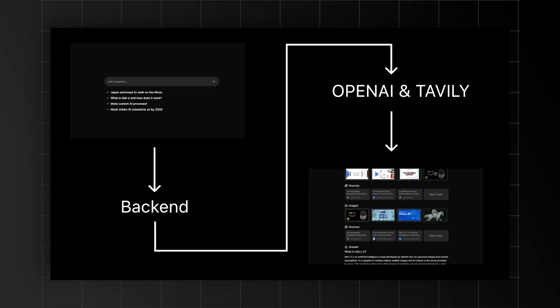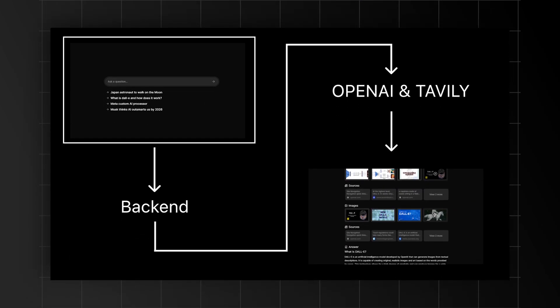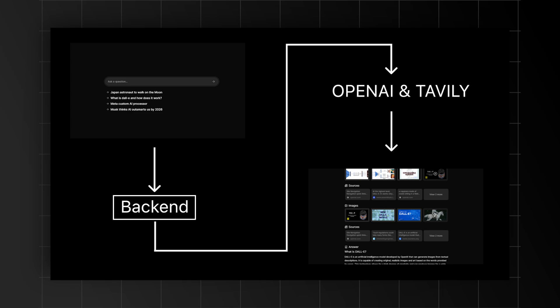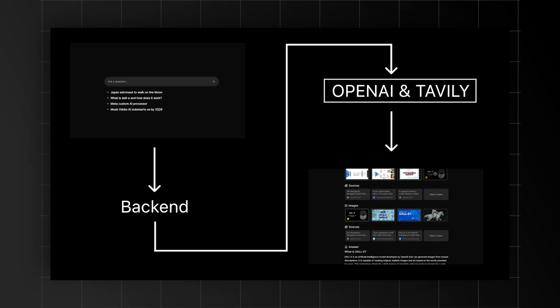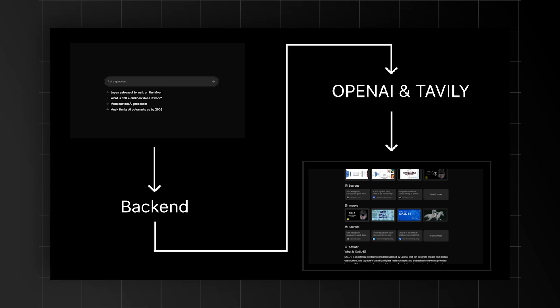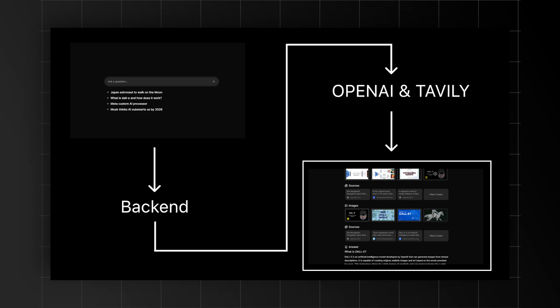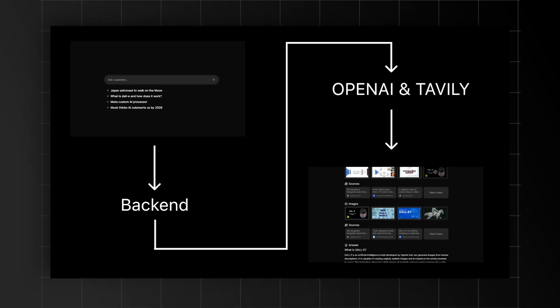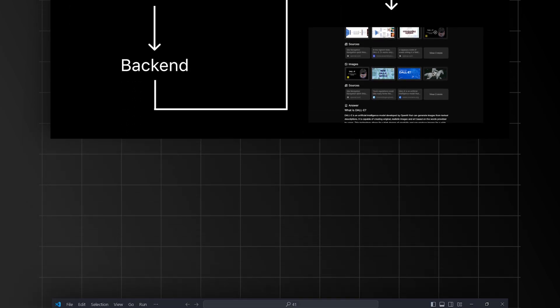The flow goes like this: we'll start by creating a simple UI. When the user inputs their data, we'll send it to our backend servers. There we'll process the text and send it off to OpenAI and Tavily through their APIs to get the responses. Finally, we'll show those responses to the user.